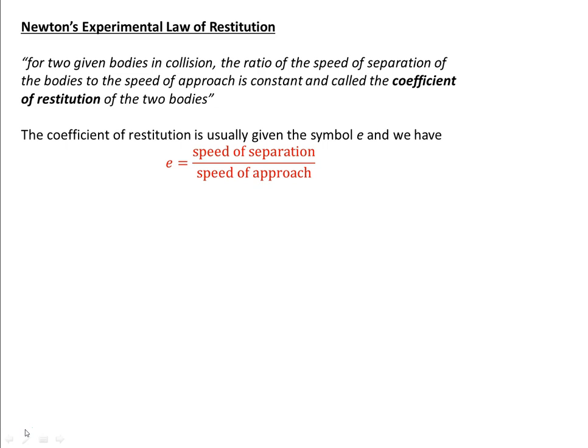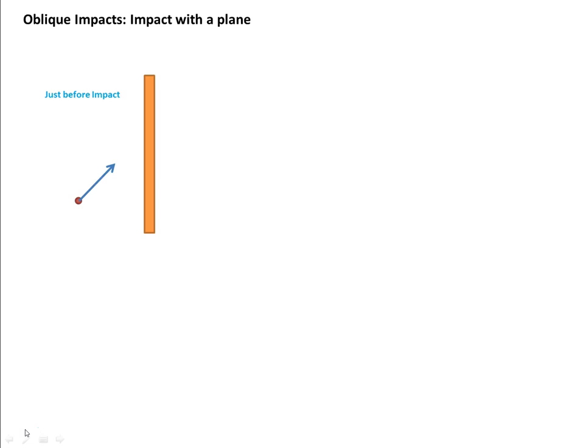We've already met Newton's experimental law of restitution in Unit 3 of the further maths specification, and we should remember that the coefficient of restitution is the ratio of the speed of separation to the speed of approach. For an oblique impact with a plane, or with a particle or ball approaching a wall, we should set up some axes with one axis being in the direction of the wall and the other axis being perpendicular to the wall.